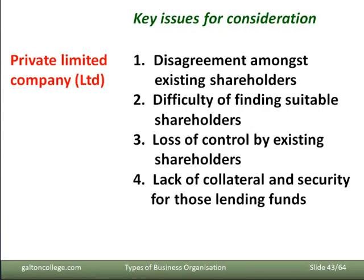The banks, in making their lending decision, will look at the element of risk in the loan. What banks really want to do is eliminate risk if they can. After all, the banks are not lending the bank's own money — they're lending the depositors' money. The depositors, perhaps you and I, want our money back eventually to do something else with it. So collateral and security for loans is an important issue.